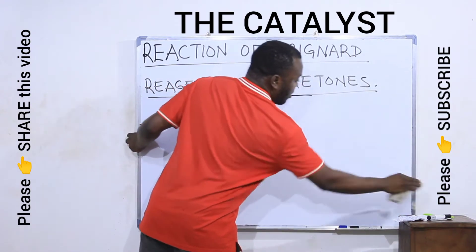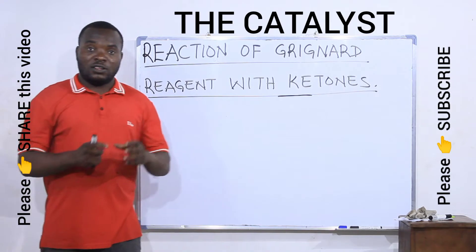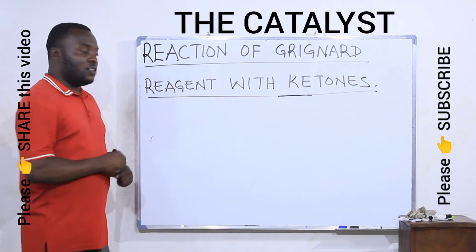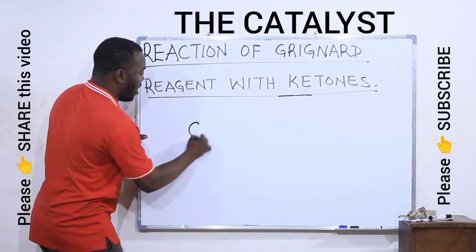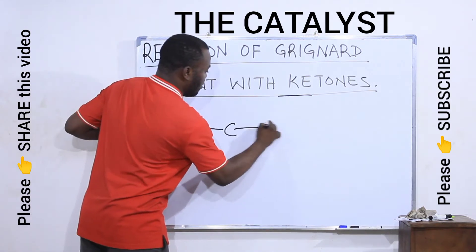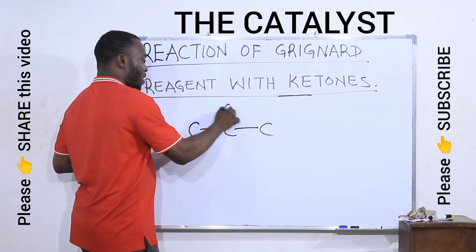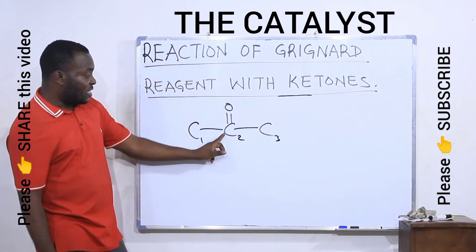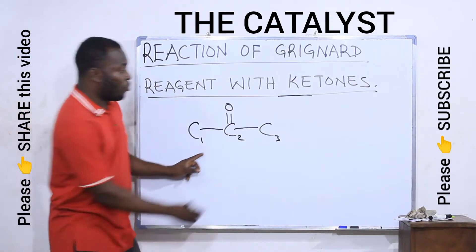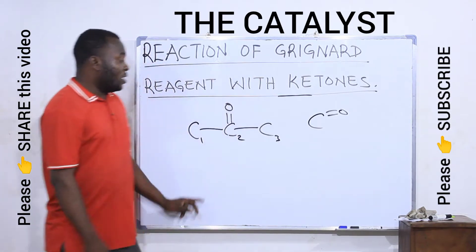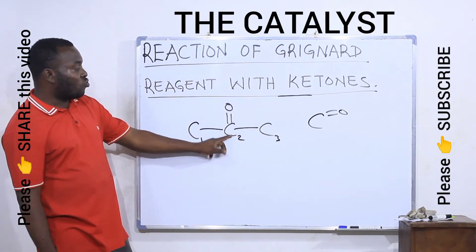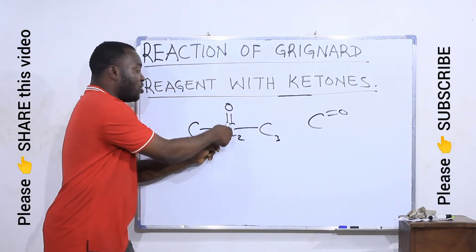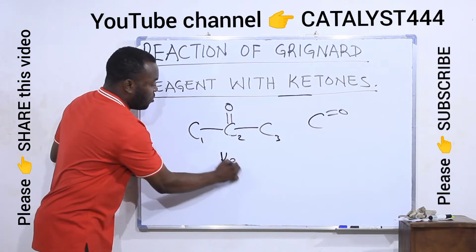Ketones are organic compounds that have a carbonyl functional group positioned inside the compound. For example, if I have a carbon chain C-C-C-C, and the carbonyl carbon is located inside — at position two of a four-carbon chain — that carbonyl functional group is inside. When the carbonyl functional group is located inside the compound, it is a ketone.